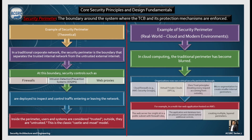In a modern cloud environment, the traditional perimeter has become blurred. Organizations now use a virtual security perimeter through cloud firewalls, virtual private clouds, zero trust principles — wherein every request is treated as coming from outside — and micro-segmentation to create smaller internal perimeters. For example, in a multi-tiered web application hosted on AWS, the web server tier might sit in a public subnet with firewall rules, while the application and database tiers are placed in private subnets behind additional controls, thus creating multiple layered perimeters.